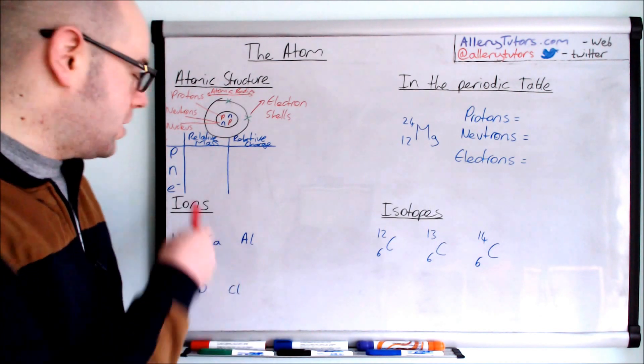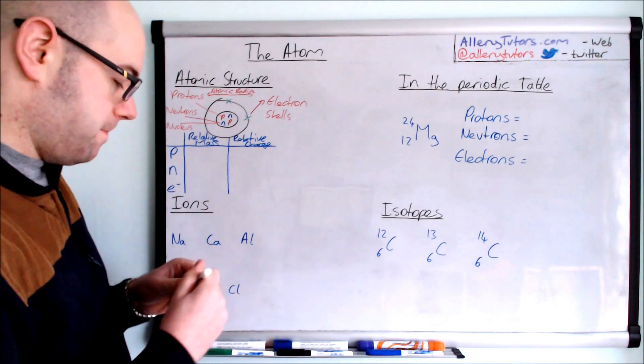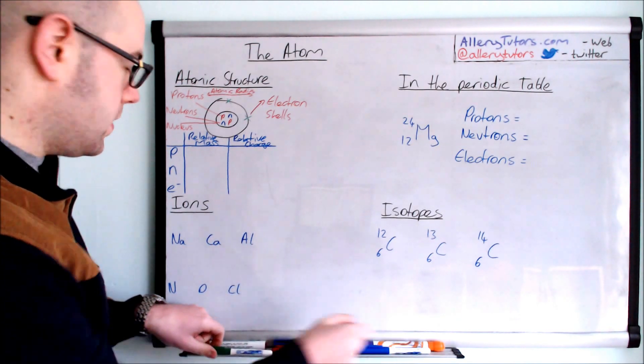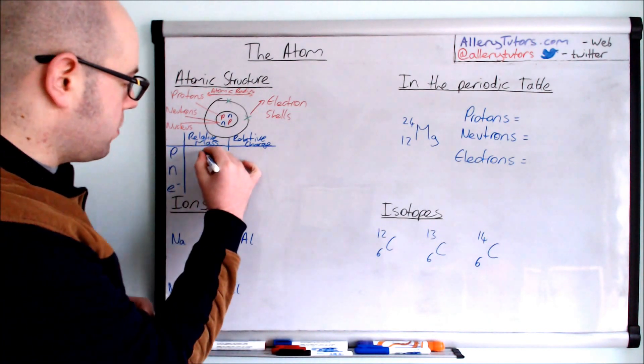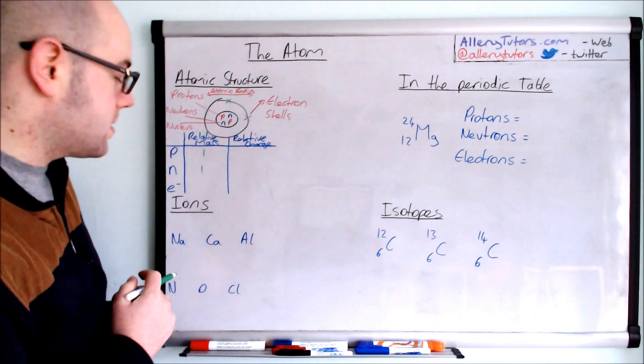So we'll start with looking at proton. Relative mass for proton is going to be 1. Same with the neutron as well. It's exactly the same. They weigh the same.